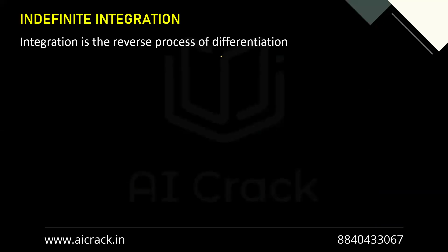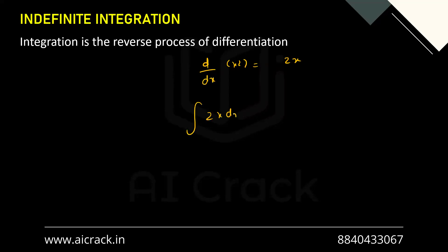Let's begin the lecture with the definition of integration. As we all know, integration is the reverse process of differentiation. So in derivatives what we studied, d/dx of x² was 2x. So if we do the reverse process of differentiation — basically integrate 2x — we should be getting x², right. But here's one problem.